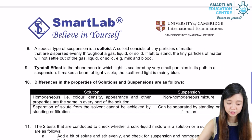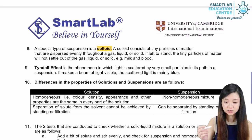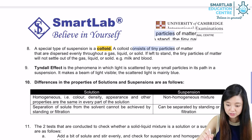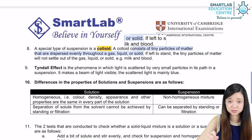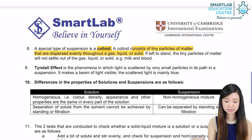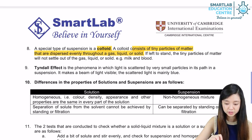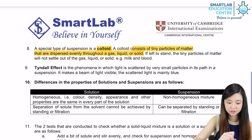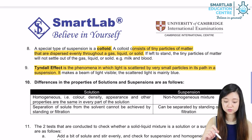A special type of suspension is called a colloid. A colloid consists of tiny particles of metal that are dispersed evenly throughout a gas, liquid, or solid. If you leave it to stand, the tiny particles of metal will not settle out of the gas, liquid, or solid. Examples include milk and blood.